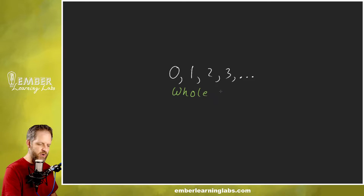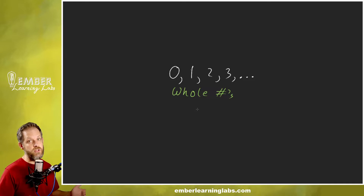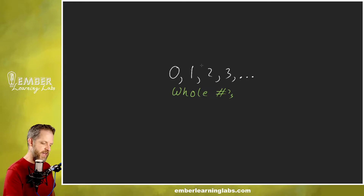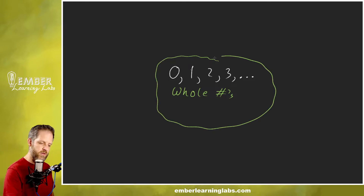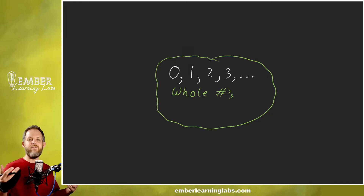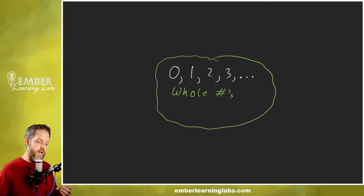Whole numbers — in case you've never seen this symbol, what I'd call a pound sign or hashtag, that's the abbreviation for 'numbers.' So we're going to do a little bubble around this. Whole numbers: things like seven, things like 12, things like 56, things like 5,280 — all of those are whole numbers.